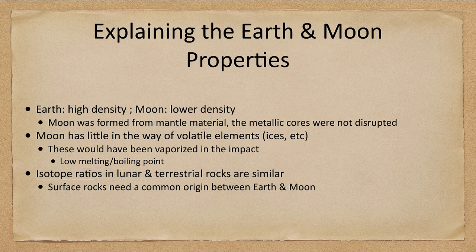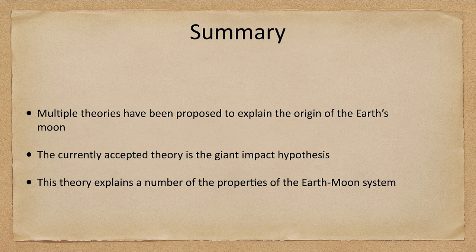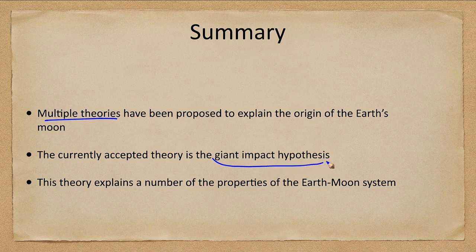So let's finish with our summary. We've looked at multiple theories to explain the origin of Earth's moon. The currently accepted theory is the giant impact hypothesis, which fits best and can explain a large number of the properties of the Earth-moon system.